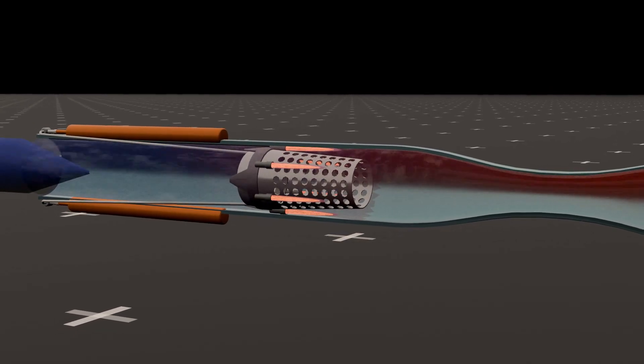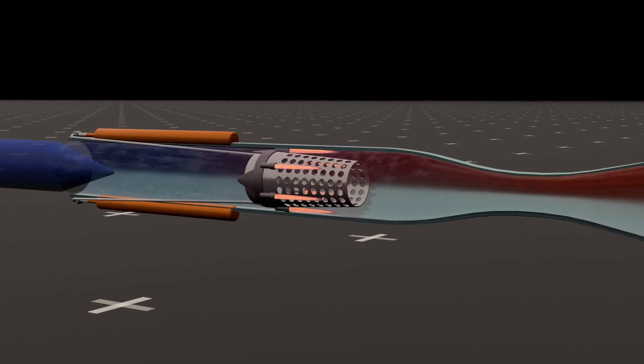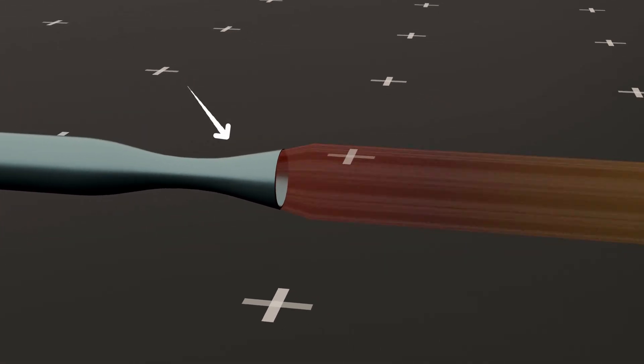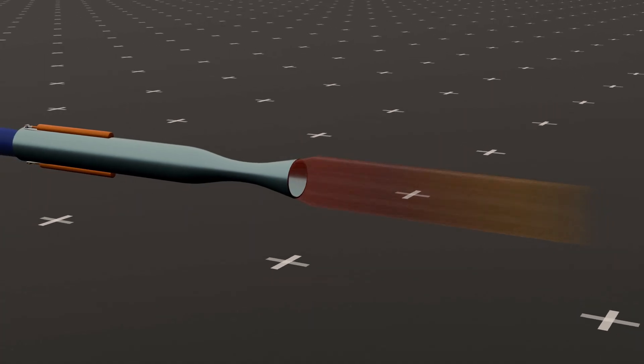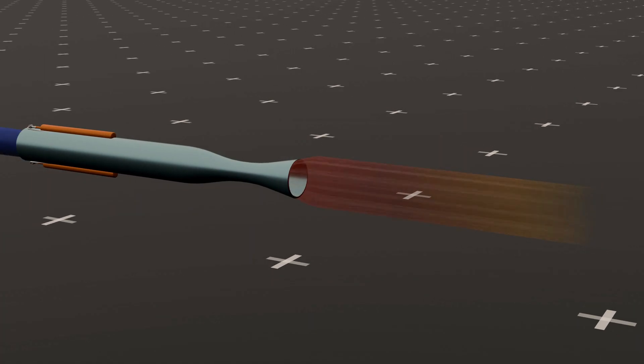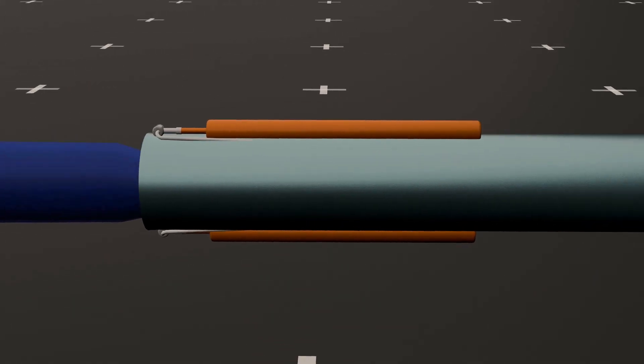To further enhance thrust, a converging-diverging nozzle is used at the exhaust. However, with this basic ramjet design, the missile speed is limited to around Mach 1.2 to 1.5, due to pressure spilling out once the combustion chamber pressure exceeds a certain limit.